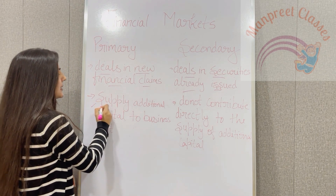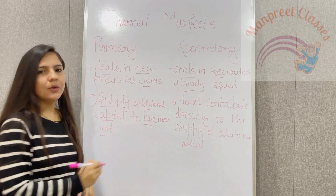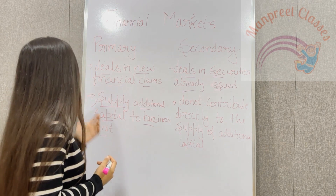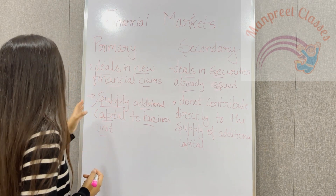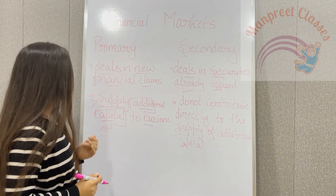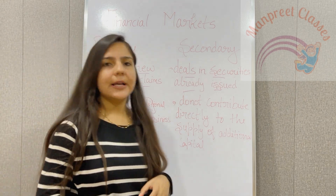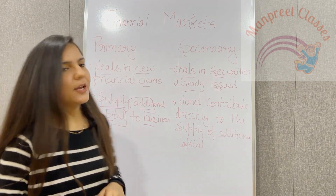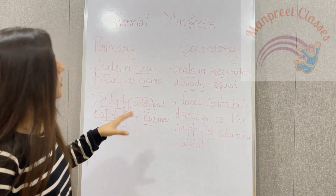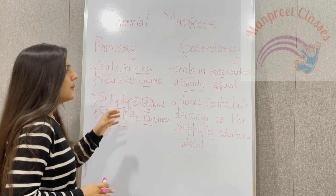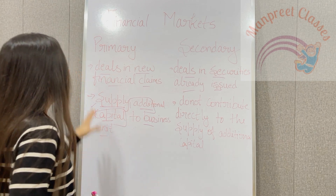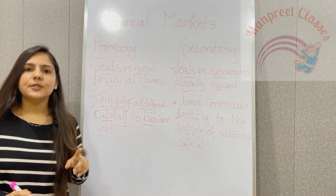Primary markets supply additional capital to business units — they are issuers of new financial securities and new financial claims, so they do add capital to the business unit. On the other hand, secondary markets do not contribute directly to the supply of additional capital, but they do so indirectly — the securities are already issued, but they somehow also contribute to additional capital, just not directly.